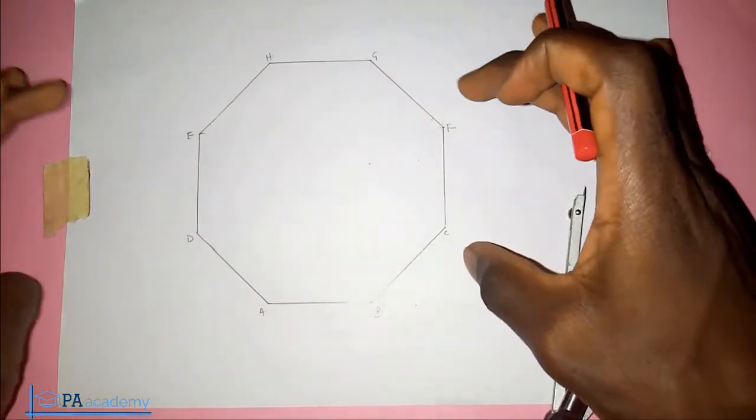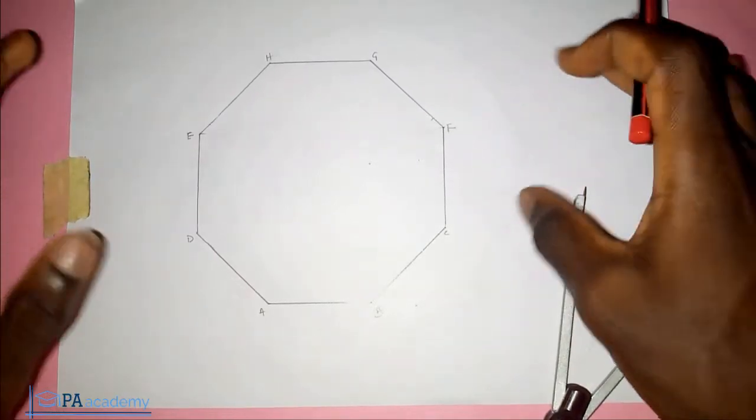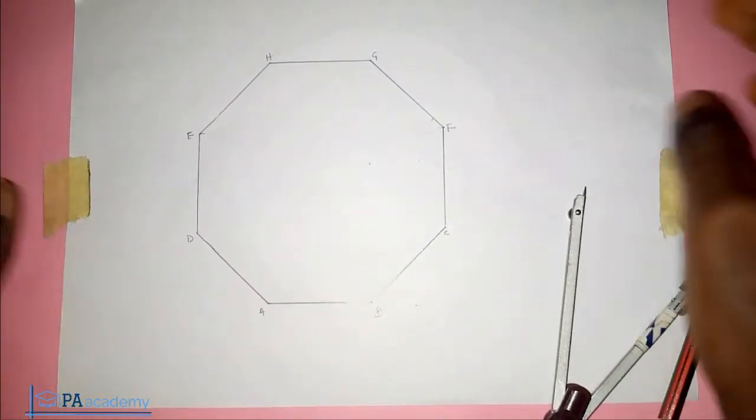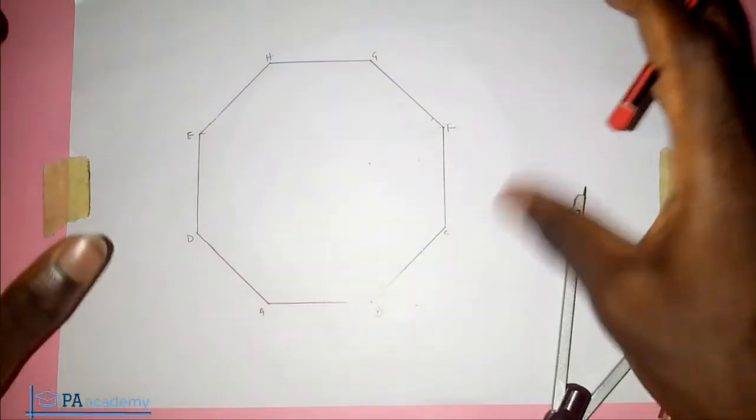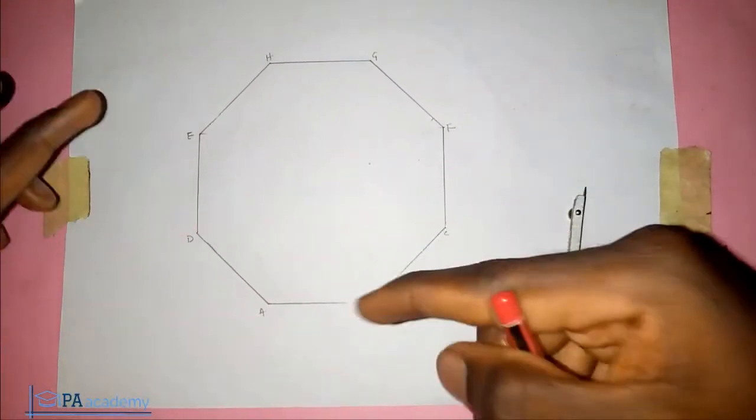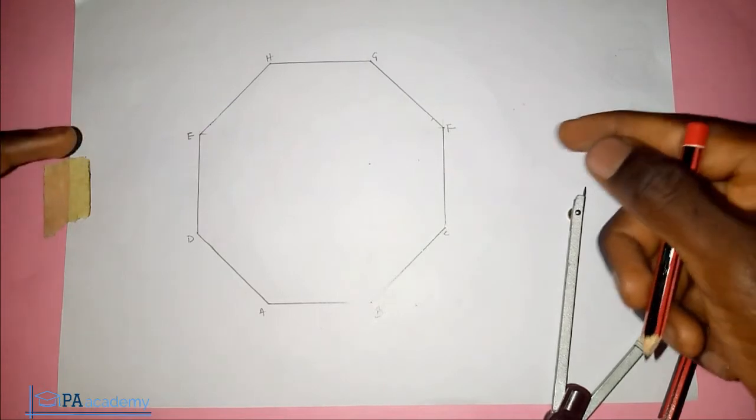The principle we're going to be using for this video applies to every other polygon, whether it's a pentagon, hexagon, heptagon, nonagon, or decagon. It's the same principle, and what is that principle? Just bisect any two angles.